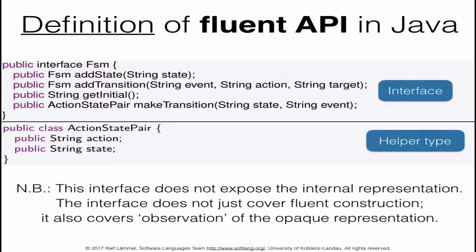Here is the actual API in the case of Java. We have an interface FSM with the addState and addTransition methods. We also add two members for observation: getInitial and makeTransition, so that we can access the constructed FSM and retrieve information about it. We need a helper type because when we make a transition — given a current state and event — we get in return the action, if any, triggered by the transition, and also the new target state.